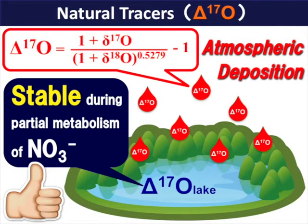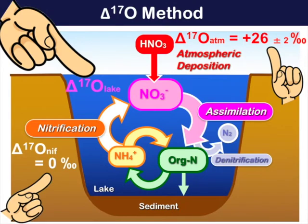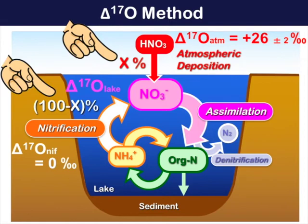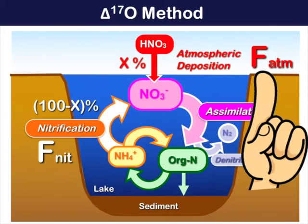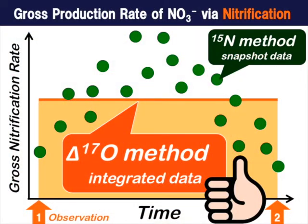Here we would like to propose an alternative simple method using the natural O17 excess of dissolved nitrate as a tracer. The average O17 excess of nitrate in a lake water column reflects the relative supply rate of nitrate between atmospheric deposition and nitrification. Besides, the deposition rate of atmospheric nitrate can be easily obtained through air quality monitoring. As a result, we can deduce the long-term average nitrification rate for the interval between observations.